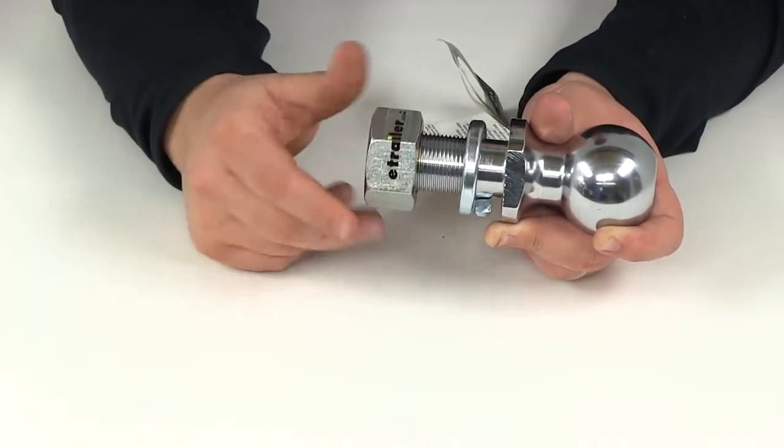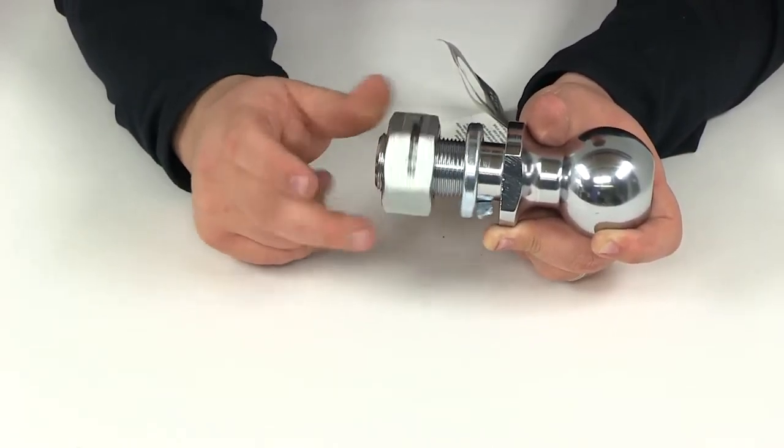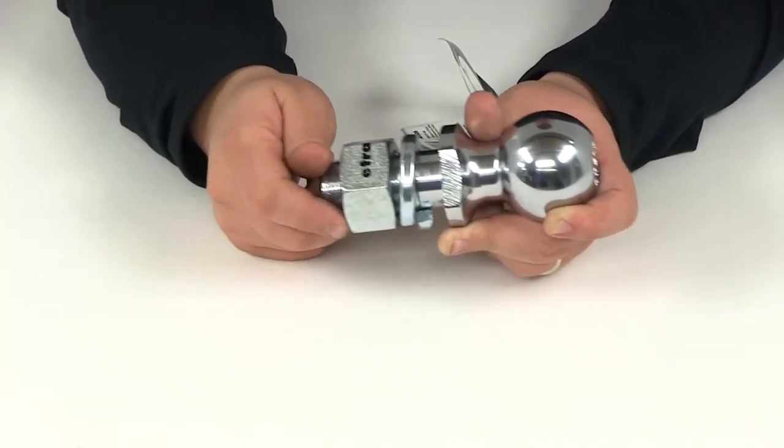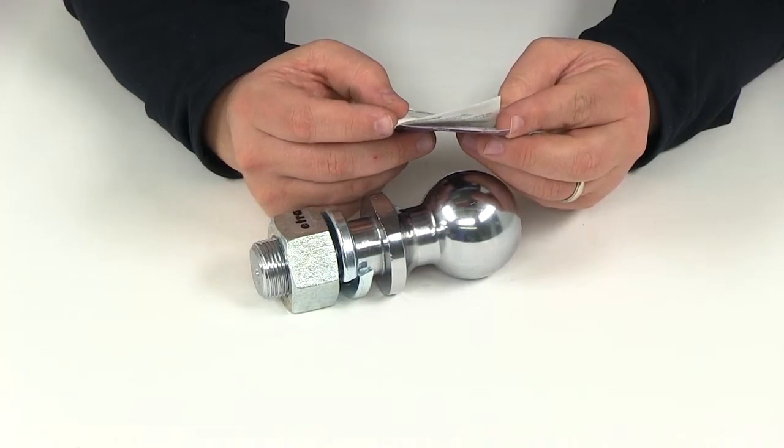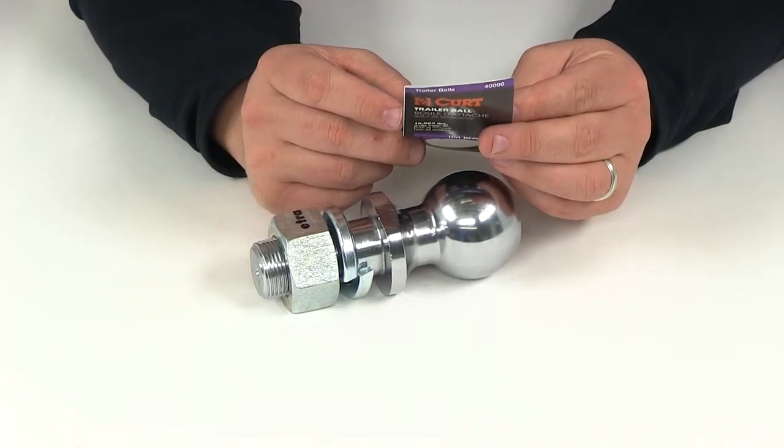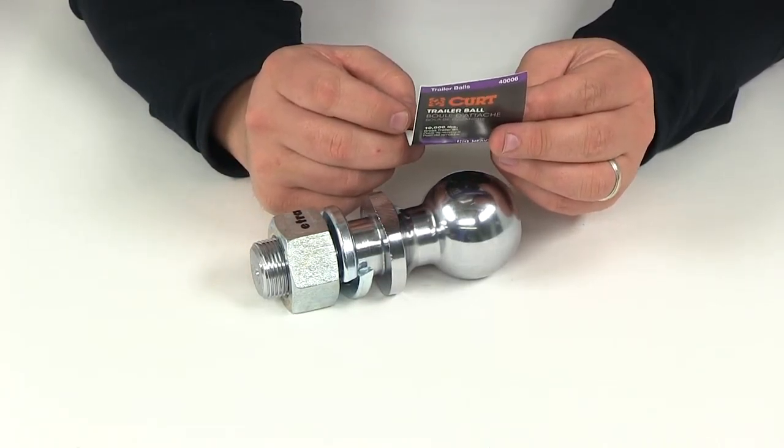And again, once you get it hand tight or once you get it tight with a wrench, you will need to go ahead and torque it down to the specifications listed by the manufacturer. And it looks like for this particular mount, it says to tighten the trailer ball to 450 foot-pounds of torque.